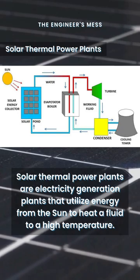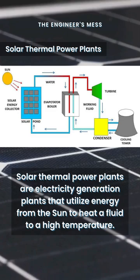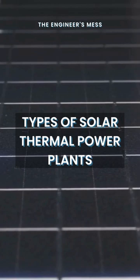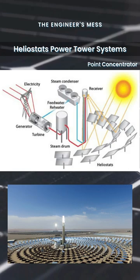Solar thermal power plants are electricity generation plants that utilize energy from the sun to heat a fluid to a high temperature. Different types of solar thermal power plants are parabolic trough systems, linear Fresnel reflector systems, heliostats power tower systems, and parabolic dish collector systems.